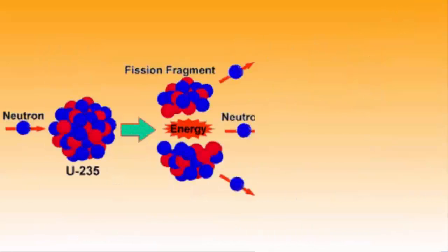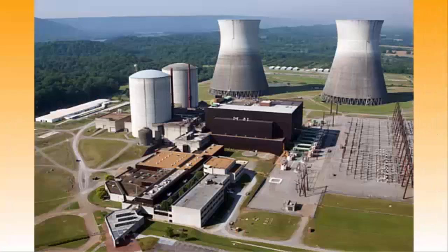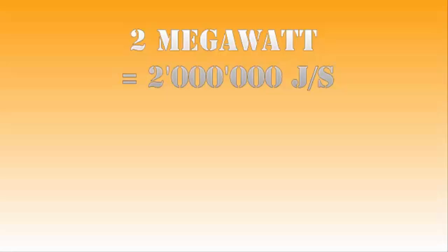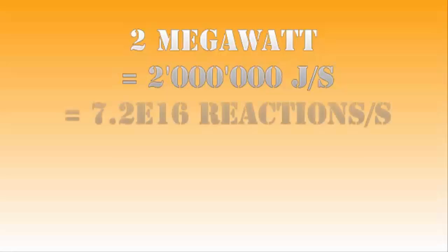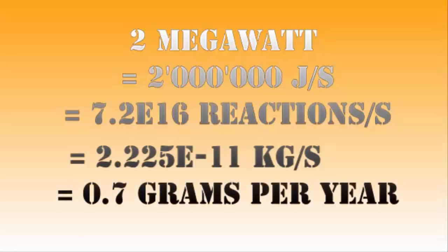This doesn't seem like a lot, but you have to consider that the number of reactions per second grows exponentially when the reaction is operational. An average nuclear power plant produces 2 megawatts, which means that inside the core there are 7.2 times 10 to the power 16 fusion reactions per second. This also means that the core loses 2.225 times 10 to the power minus 11 kilogram of mass per second, or 0.7 grams per year.